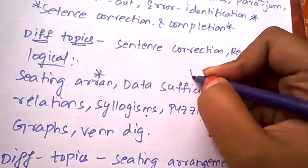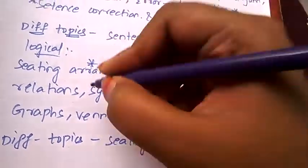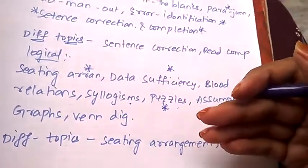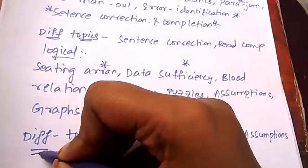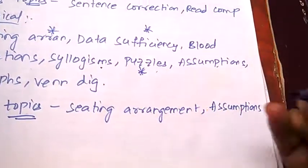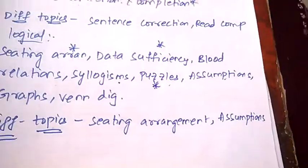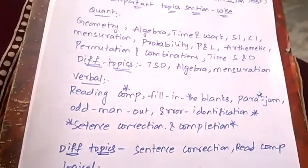Coming to difficult topics for logical CAT are seating arrangement and assumptions. So these are the few important topics section-wise for Common Admission Test.